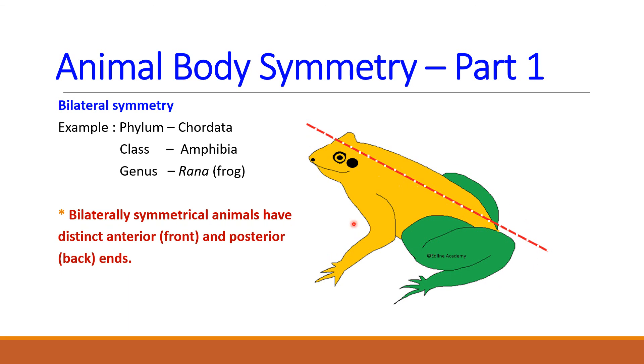The important feature of bilaterally symmetrical animals is that they have distinct anterior end and posterior end. Most of the sensory organs like tympanum, eyes, nostrils are located at the anterior end.